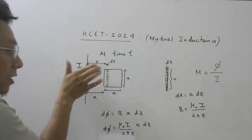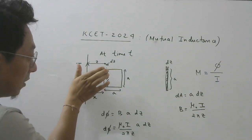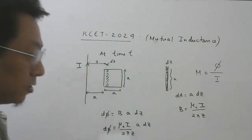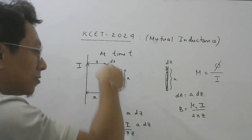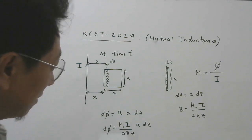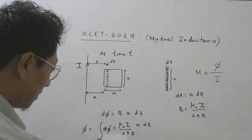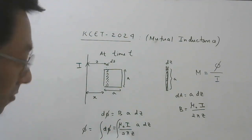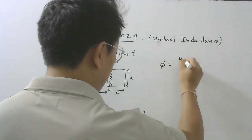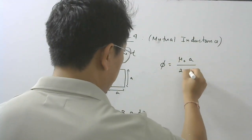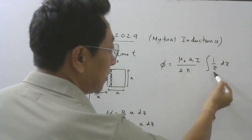From the right-hand thumb rule, the magnetic field goes perpendicularly through the area, so the angle is zero and cos 0 = 1 — no need to write it explicitly. To find the total flux, we integrate. Constants come outside: μ₀A / 2π · I · ∫(1/Z) dZ.